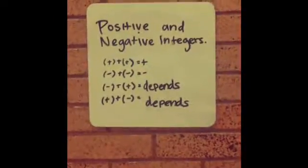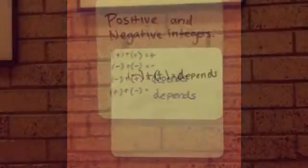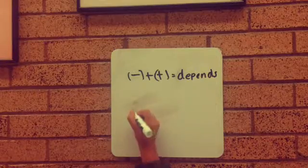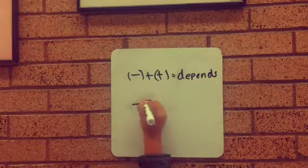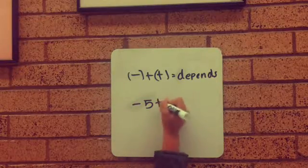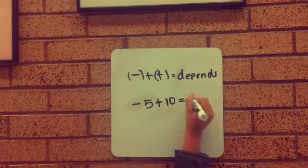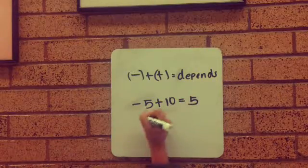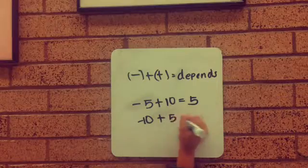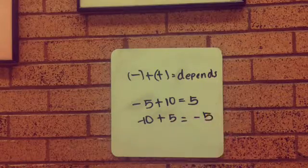Did you learn about positive and negative integers? A negative plus a positive depends — for example, negative 5 plus 10 equals 5, and negative 10 plus 5 equals negative 5.